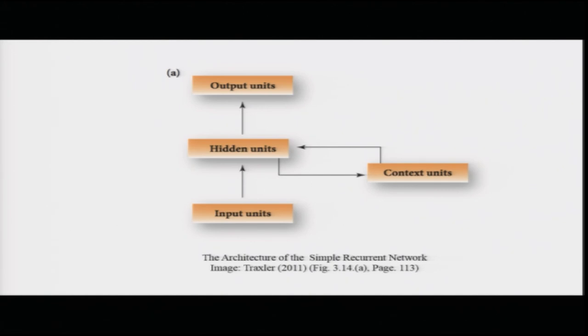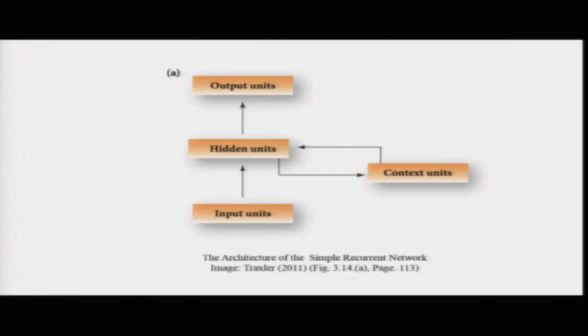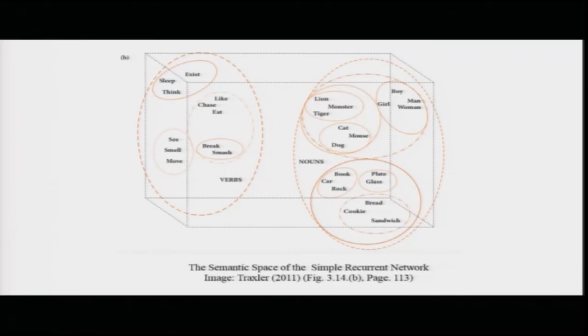The model has output units, input units, hidden units in the middle, and context units modulating activation in the hidden layers. After multiple iterations, the model produces a semantic space that groups words similar to each other - broadly separating nouns from verbs, then putting similar nouns and similar verbs together. This is the model classifying your semantic space after a number of iterations.